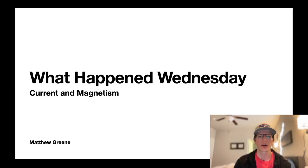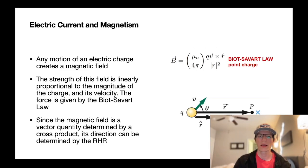All right, so in this What Happened Wednesday, I'm going to be talking about current and magnetism. Any motion of an electric charge can create a magnetic field.